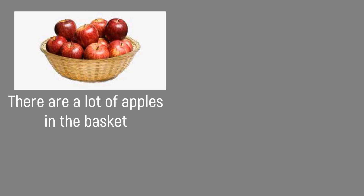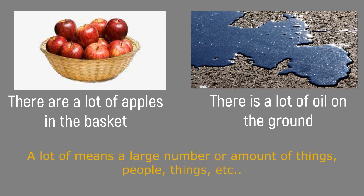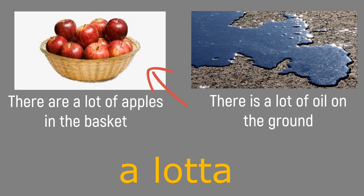There are a lot of apples in the basket. There is a lot of oil on the ground. The word 'a lot of' works with both countable nouns and uncountable nouns. In English, 'a lot of' means a large number or amount of things, people, animals, etc. Americans often say it as 'a lot.' For example: There are a lot of apples in this basket.